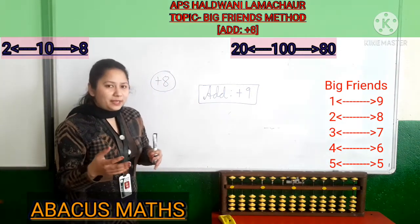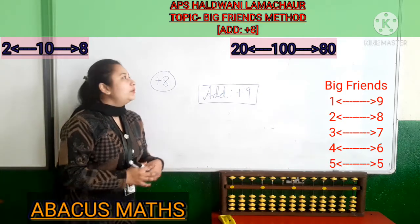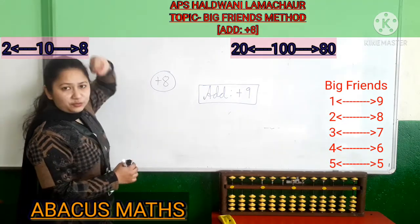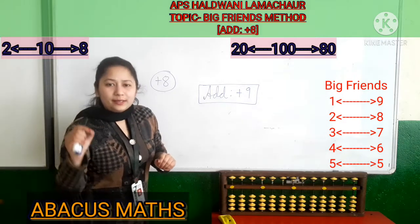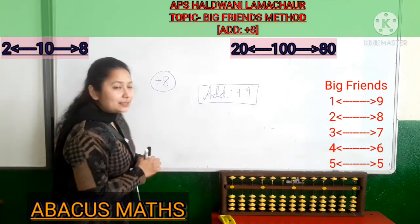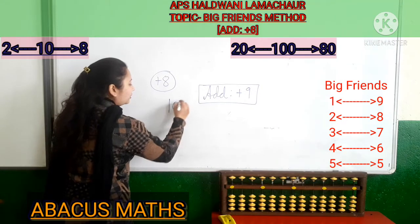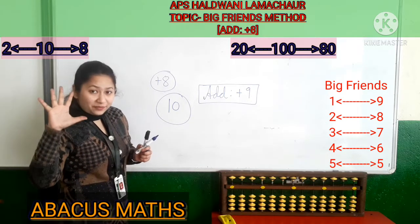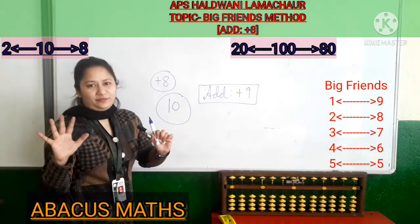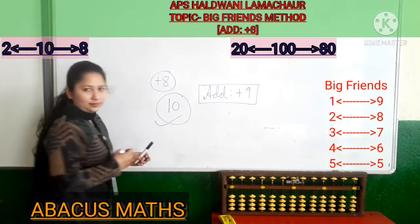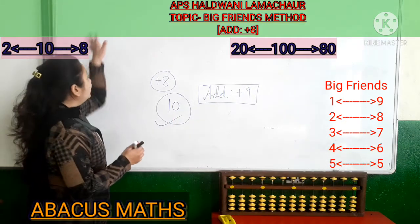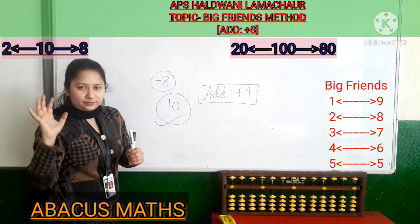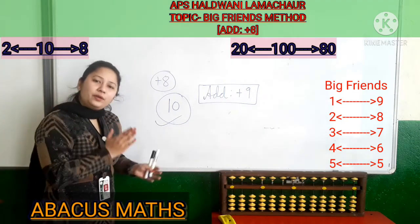Today our topic is big friends add 8. You can see in the box it is written: 2, 10, 8. This means that in big friends we use 10. In small friends we use 5 — 5 was the main friend. In big friends, 10 is the main friend. And 2 is the friend of 8.